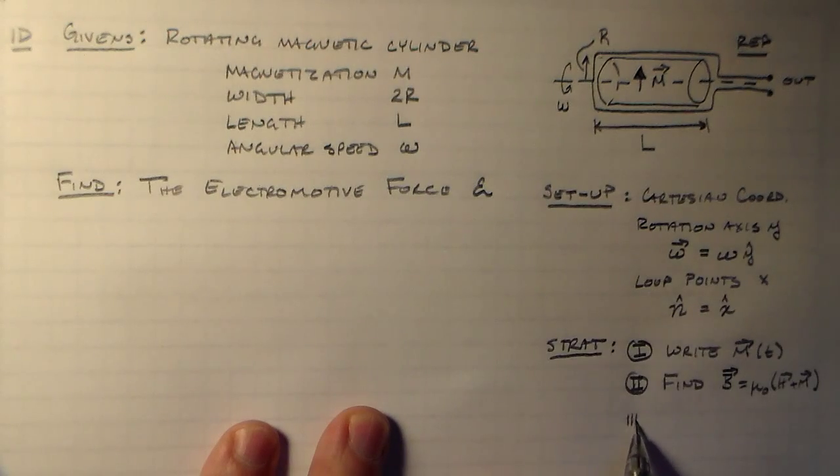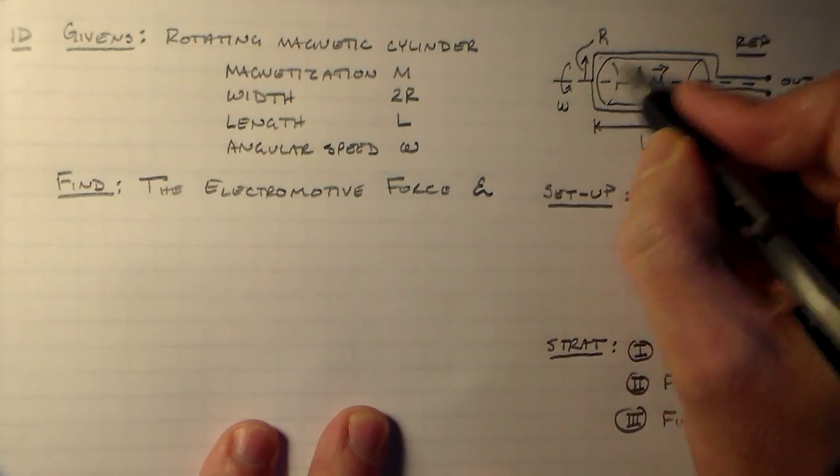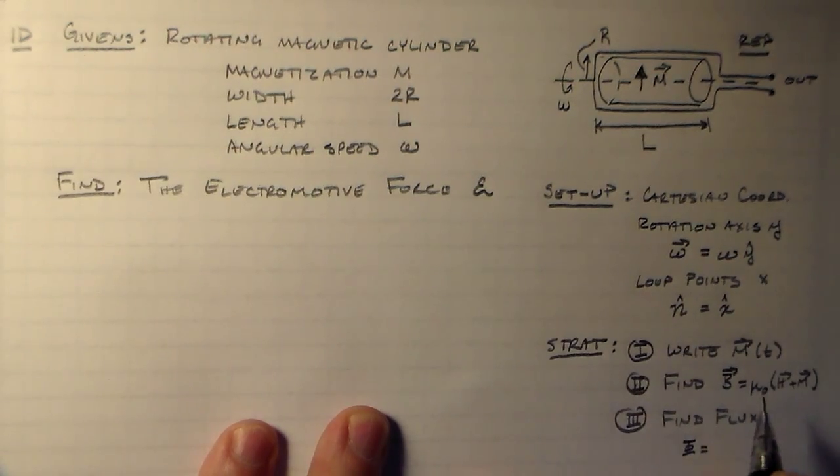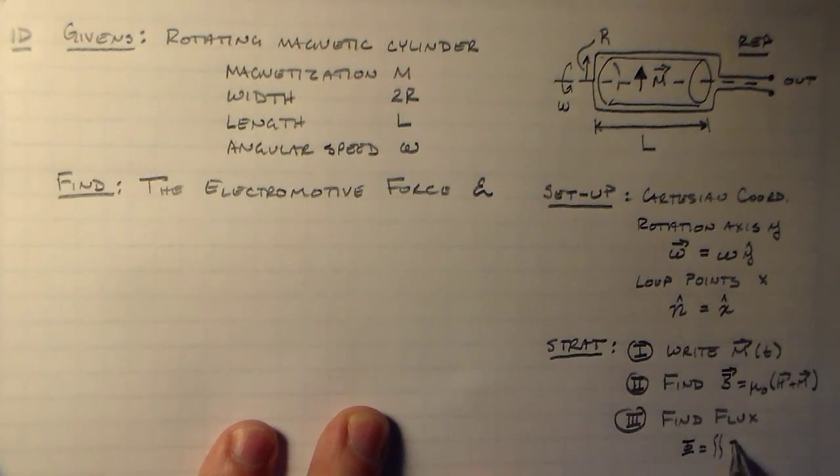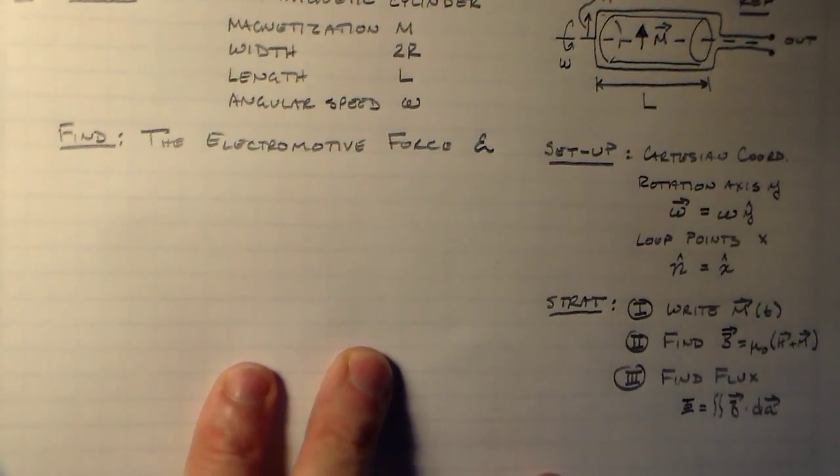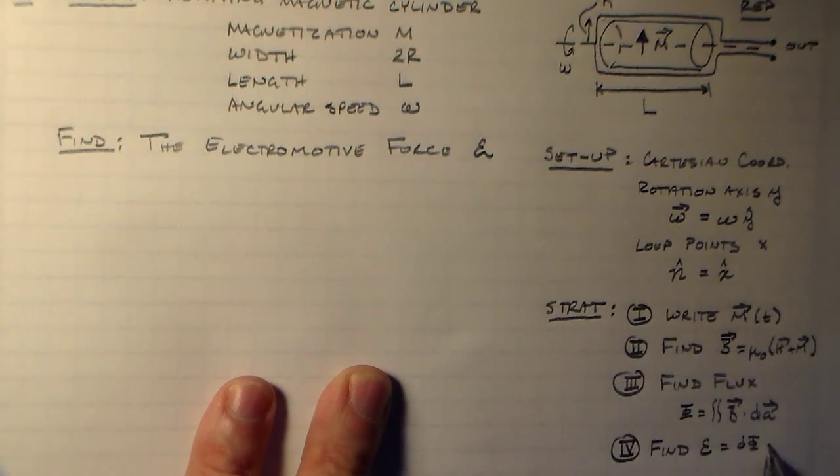Then we'll need to get the flux out of that. So we need to find the flux that's going through this loop. And that's going to be phi is equal to the double integral of b dot dA. We want to find the electromotive force, which is just the derivative of the flux with respect to time. So that's more or less what we're going to need to do.